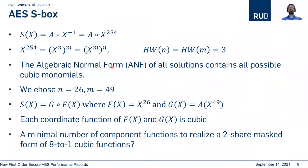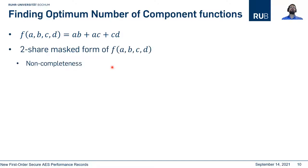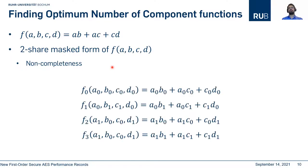Now the question is, what is the minimum number of component functions to realize a two-share masked form? I would like to explain this problem with a simplified example. We have function f with 4 inputs which is a quadratic function. Each component function should be non-complete. For a simple function, 4 component functions is enough. If you take AB as the first monomial, A0B0 goes to the first component function, A0B1 to the second one, A1B0 to the third one, and A1B1 to the last one. We can do the same for other monomials without any problem.